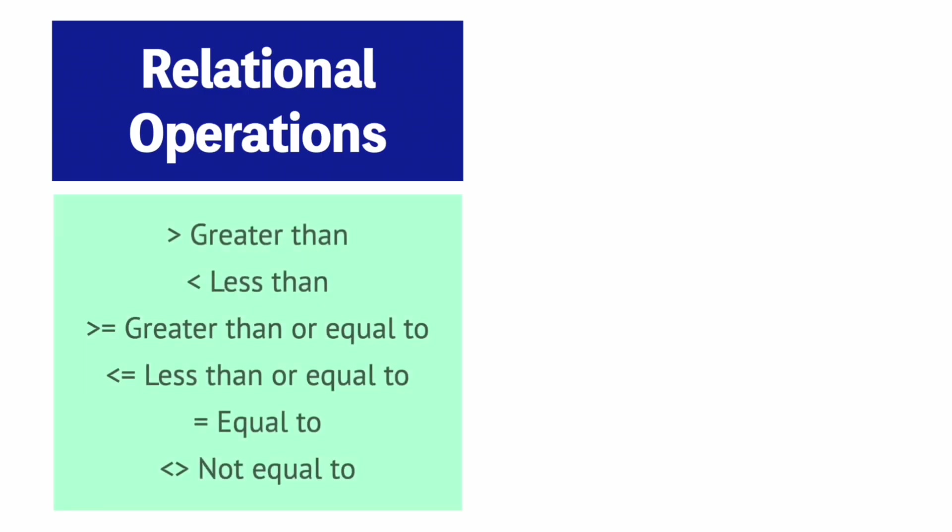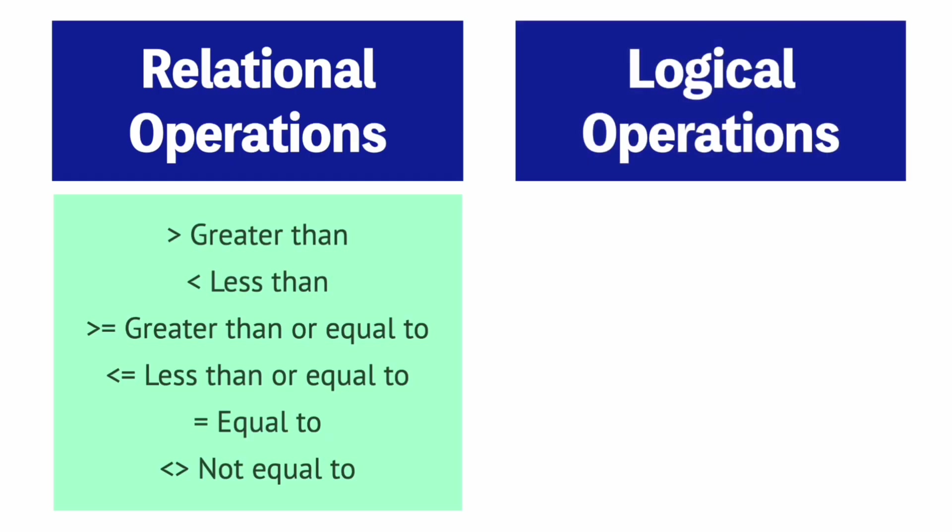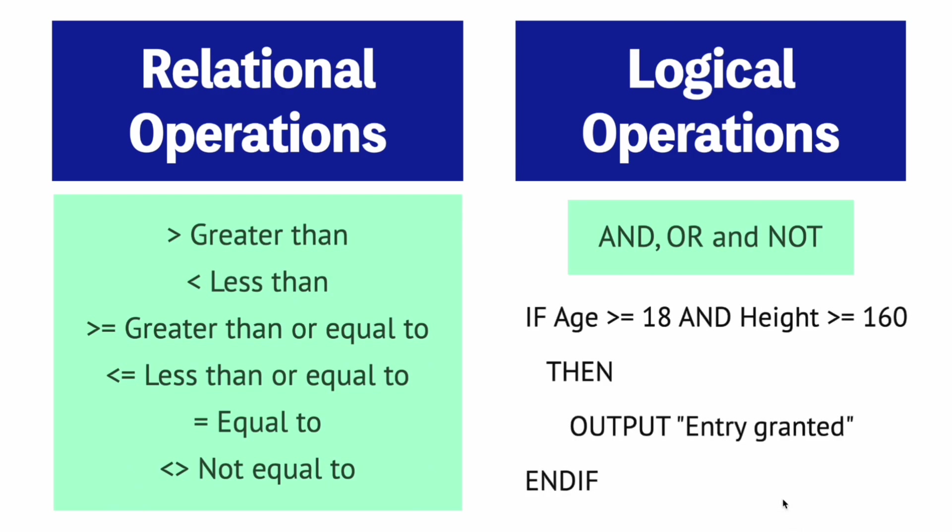Next we have relational operations which are shown through these inequality symbols and are used to compare two values. We also have the logical operations of AND, OR, and NOT. These three allow us to perform boolean operations and also allow us to form more complex statements. For example, we can use the AND operator to expand an IF statement to include two conditions. This is if age is greater than or equal to 18 and height is greater than or equal to 160 then output entry granted.